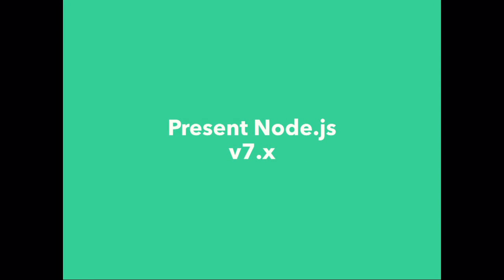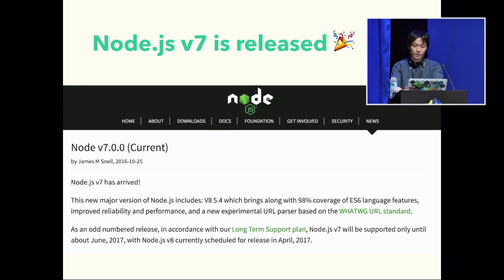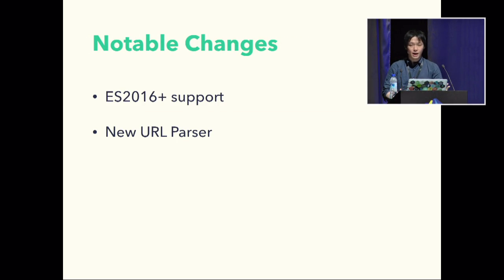The next slide shows the current Node.js v7.0. Congratulations — Node.js v7.0 was released on October 25th. Node.js v7.0 has various changes. I'll introduce two notable ones: the first is ES 2016 support, and the second is the new URL parser.